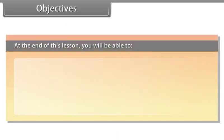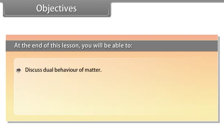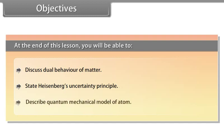At the end of this lesson, you will be able to: discuss the dual behavior of matter, state Heisenberg's uncertainty principle, and describe the quantum mechanical model of atom.